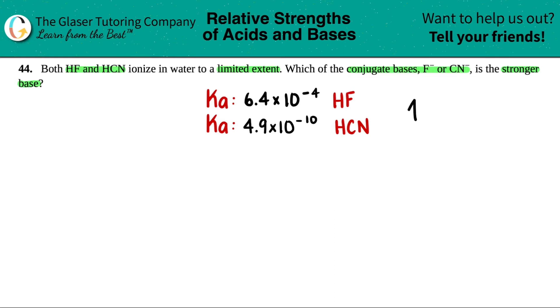Now remember, the greater the Ka value, the more acidic you are. So if that's the case, 6.4 times 10 to the negative fourth is a higher number than 4.9 times 10 to the negative tenth. Since this Ka value is higher, that means that HF would be more acidic.